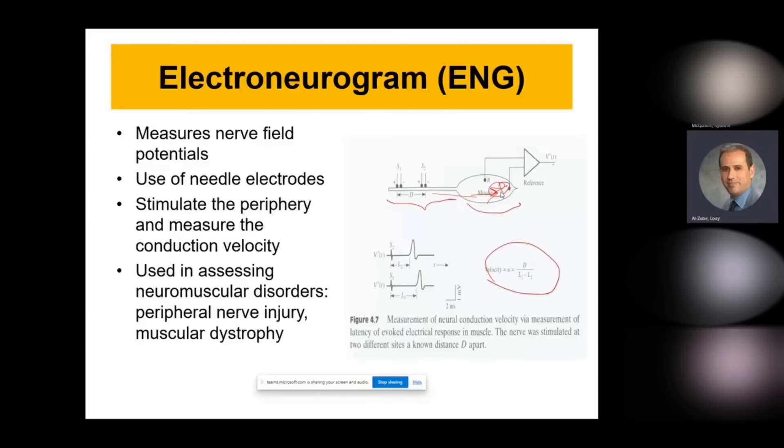The conduction velocity is useful in assessing neuromuscular disorders, peripheral nerve injuries, as well as muscle dystrophy. So this is the clinical application for this conduction, but it's invasive and we don't actually use it for humans unless it's really something that we need to address. And most of this is done in animals actually.